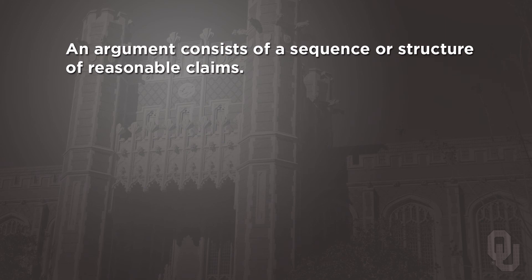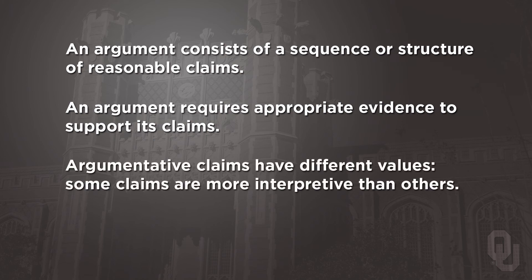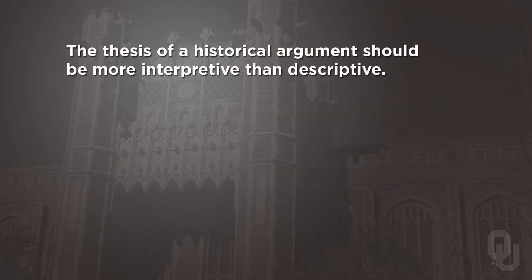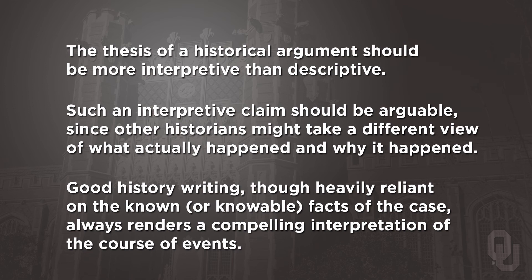The pyramid diagram is only a crude scheme, but it illustrates the important points of this lesson: An argument consists of a sequence or structure of reasonable claims. An argument requires appropriate evidence to support its claims. Argumentative claims have different values — some are more interpretive than others. The thesis of a historical argument should be more interpretive than descriptive, and such an interpretive claim should be arguable, since other historians might take a different view of what actually happened and why. Good history writing, though heavily reliant on the known facts of the case, always renders a compelling interpretation of the course of events.